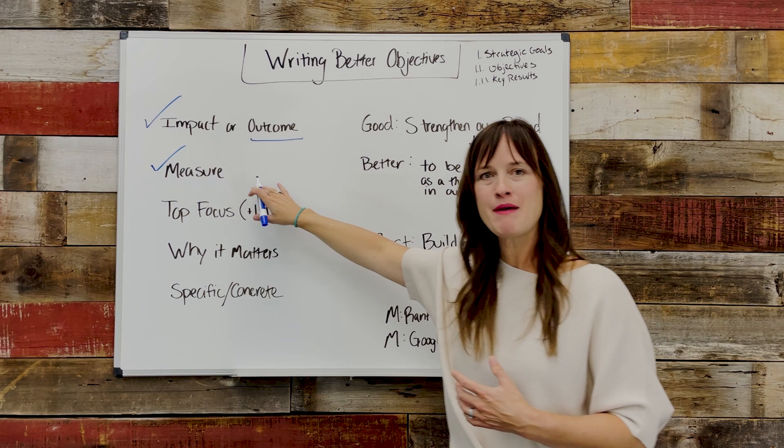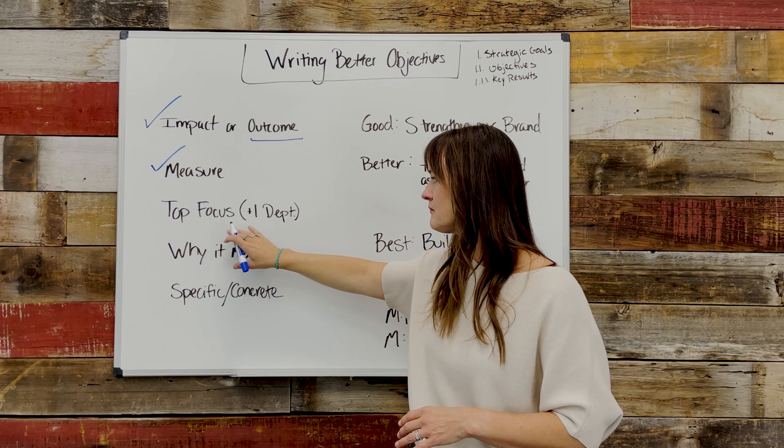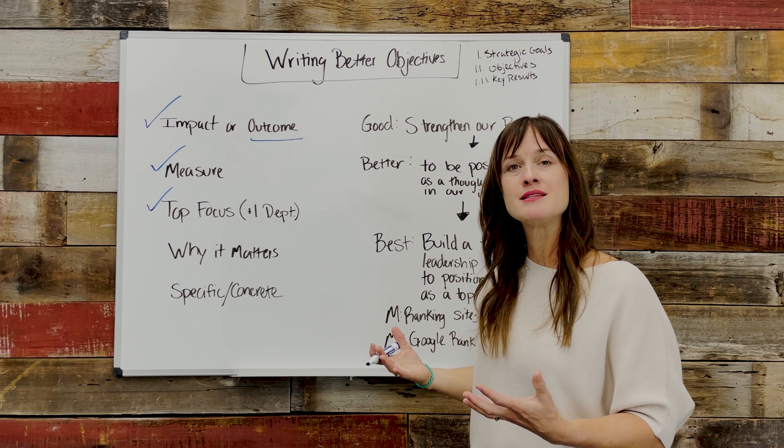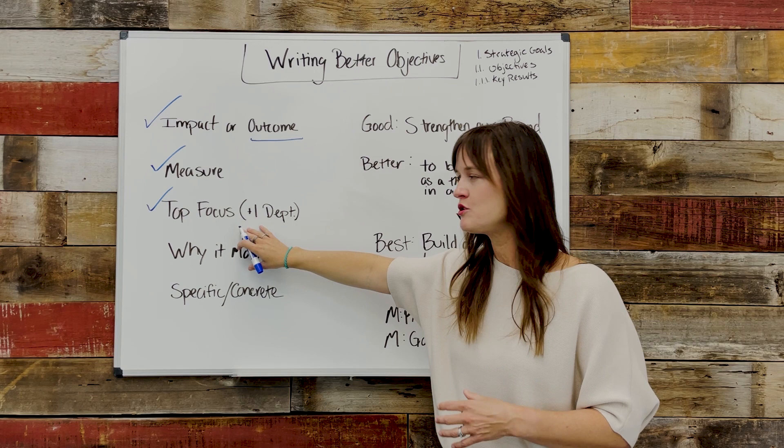Let's be clear about the fact that we do want to be able to measure it. Sometimes people want the measure in the objective statement, sometimes it just sits as a sister idea — either way, we need to make sure that it is actually measurable. It should be a top focus of the organization or your team. When writing team objectives, you know it's a top focus when one or more functional areas or teams has to contribute to achieve the objective.